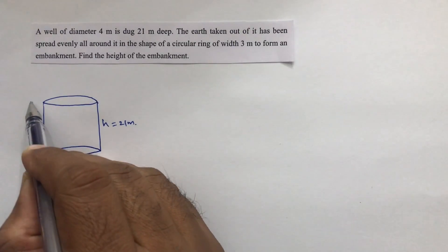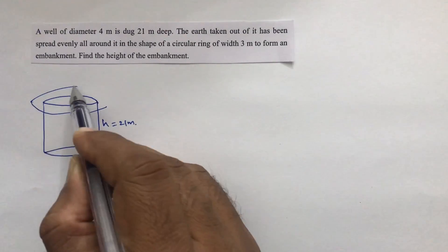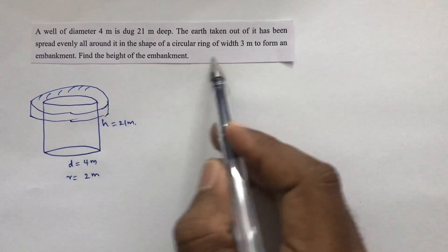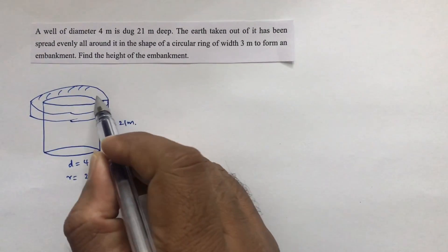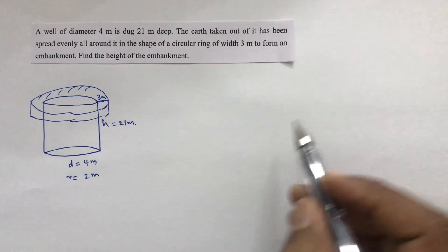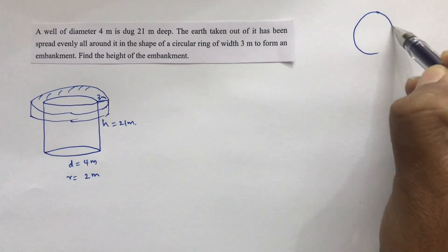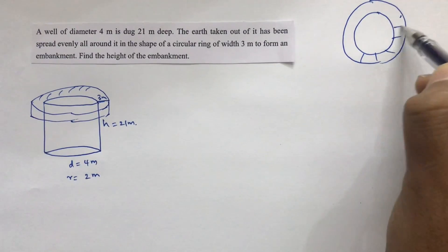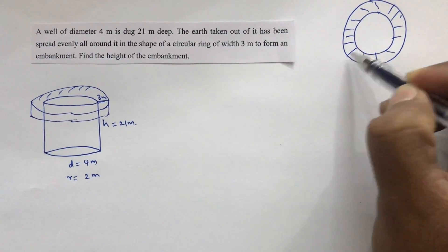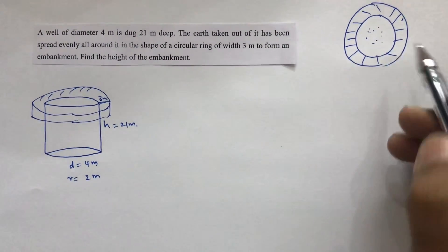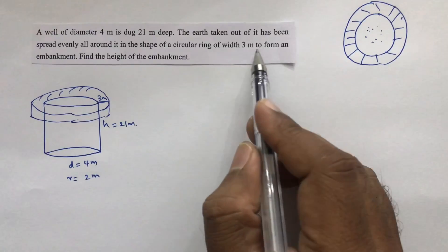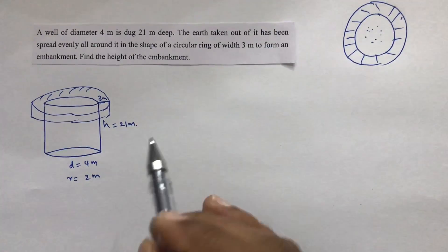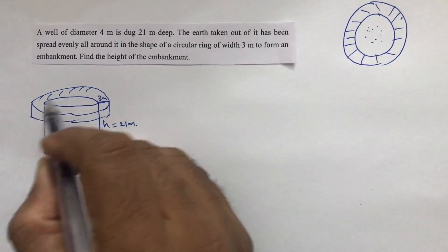The earth taken out has been spread evenly all around it in the shape of a circular ring of width 3 meters. If you see from the top, it will look like this — this is the well and this surrounding part is the embankment, which is 3 meters wide.